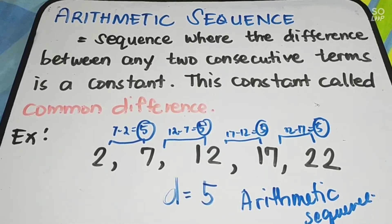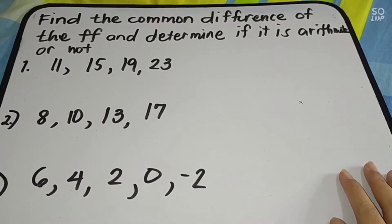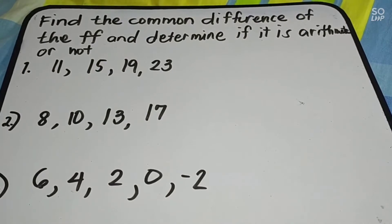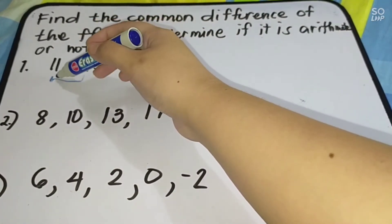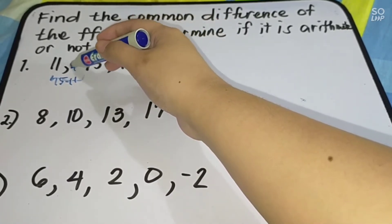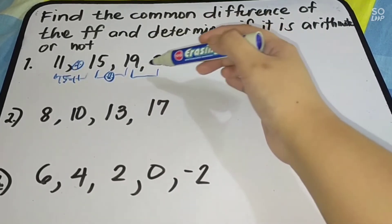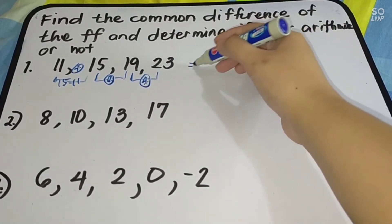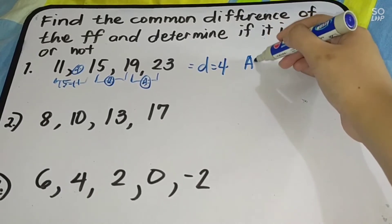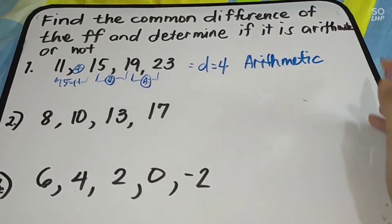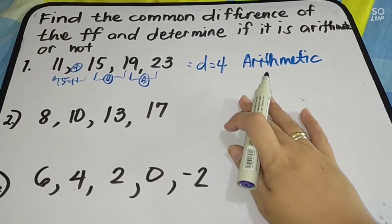Let's move to more examples. Find the common difference of the following and determine if it's arithmetic or not. Example number 1: 11, 15, 19, and 23. Let's start from right to left. We have 15 minus 11 = 4; 19 minus 15 = 4; 23 minus 19 = 4. Therefore, we have a common difference. D = 4. Since we have a common difference, this sequence is an arithmetic sequence.